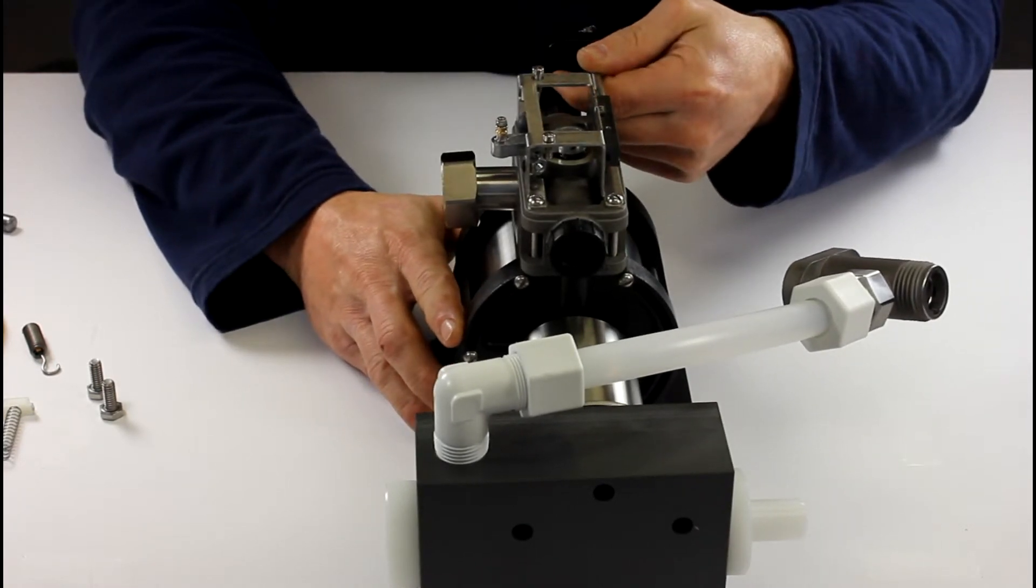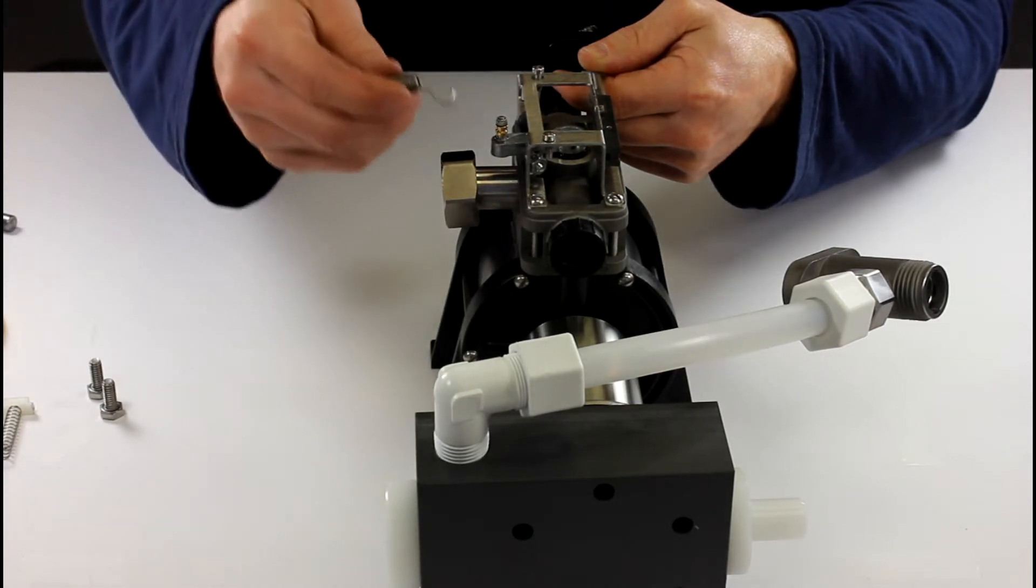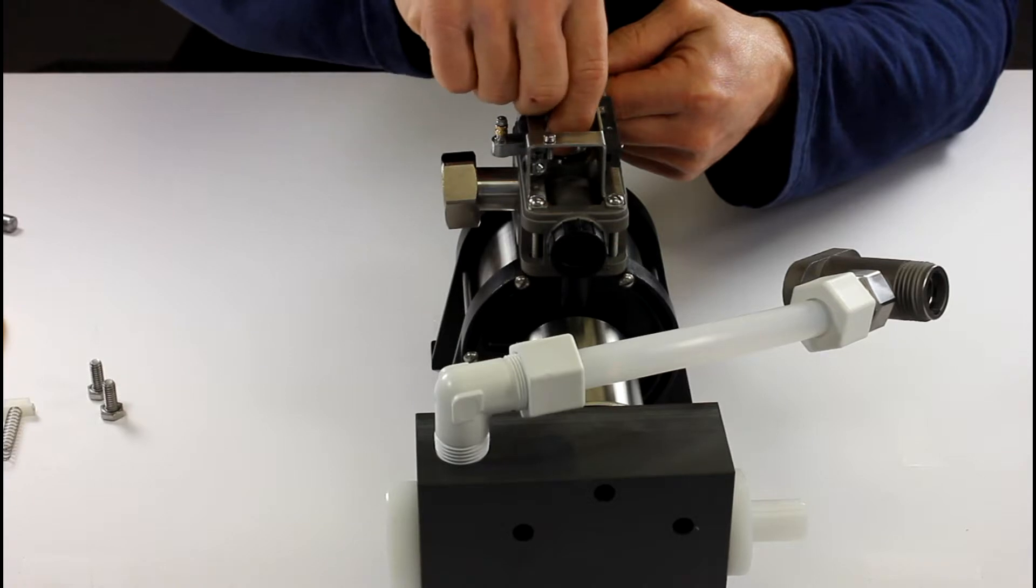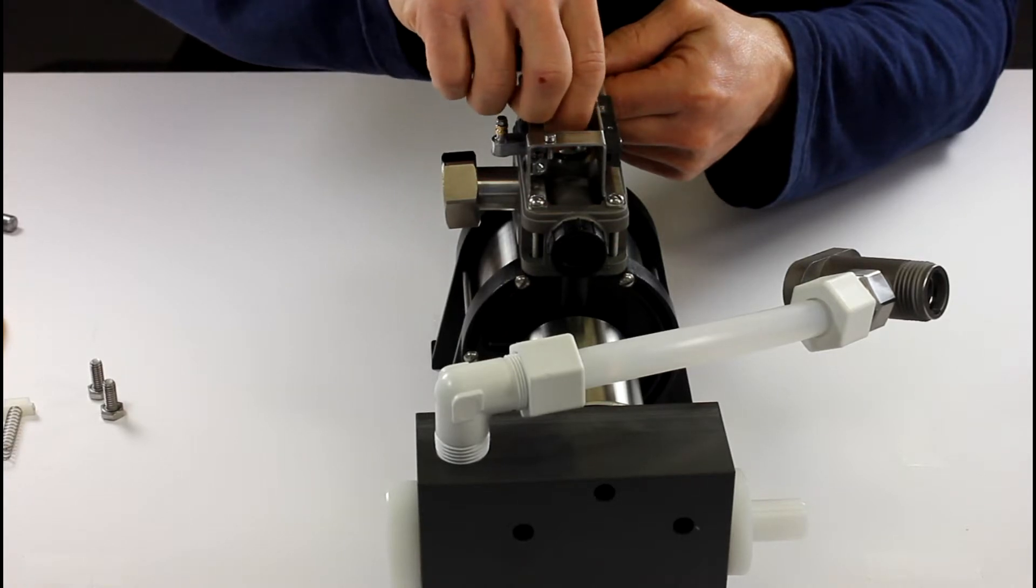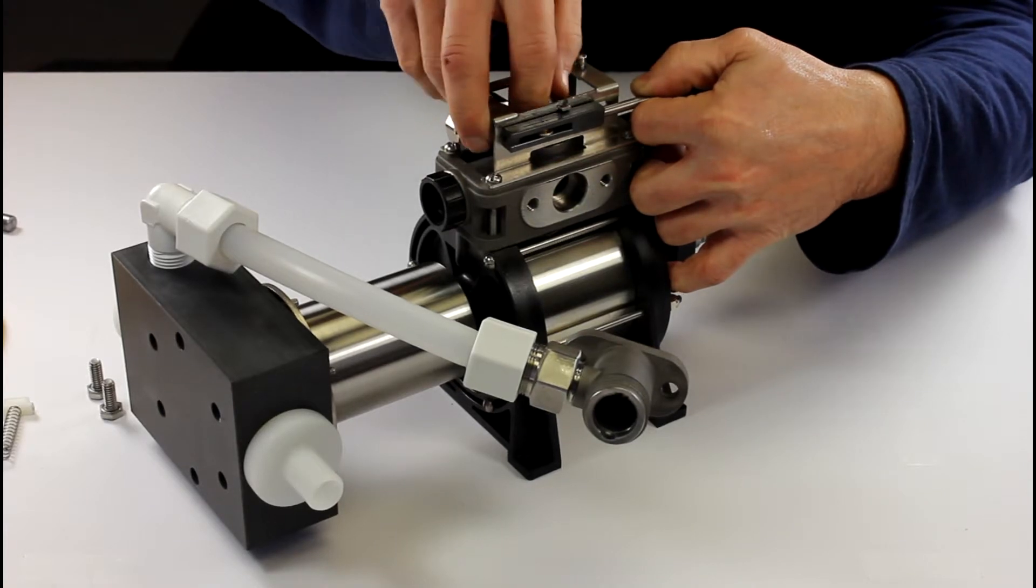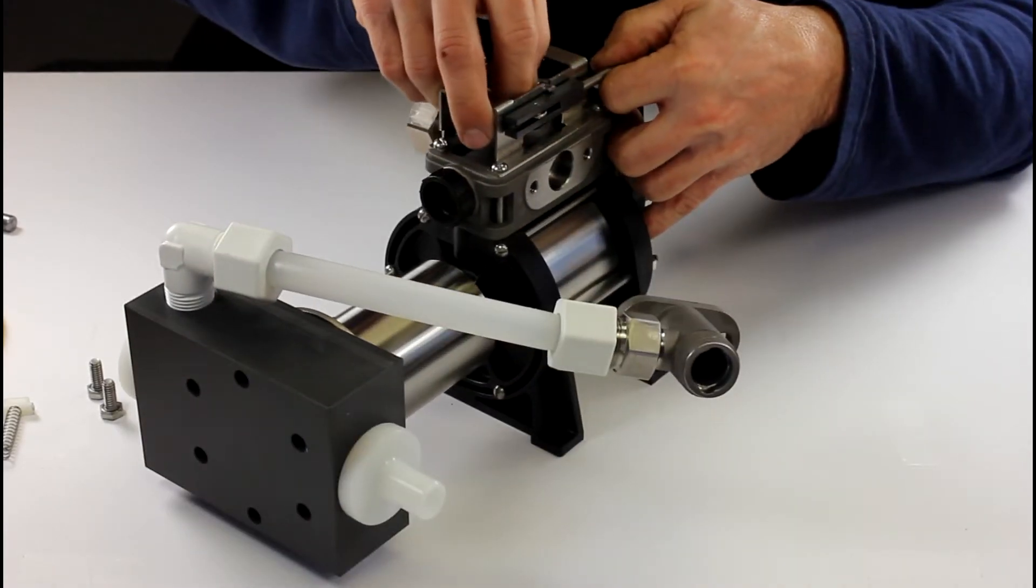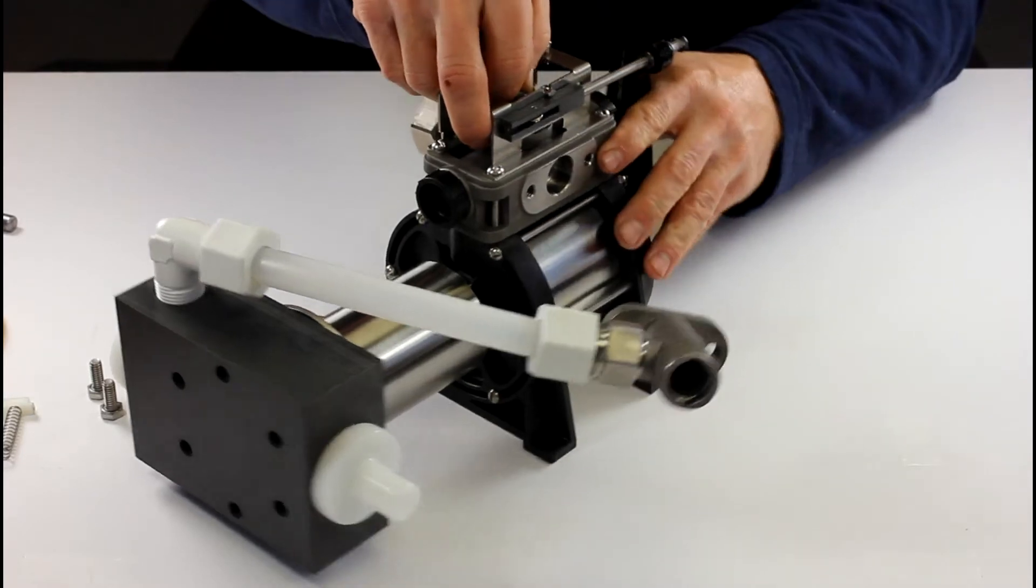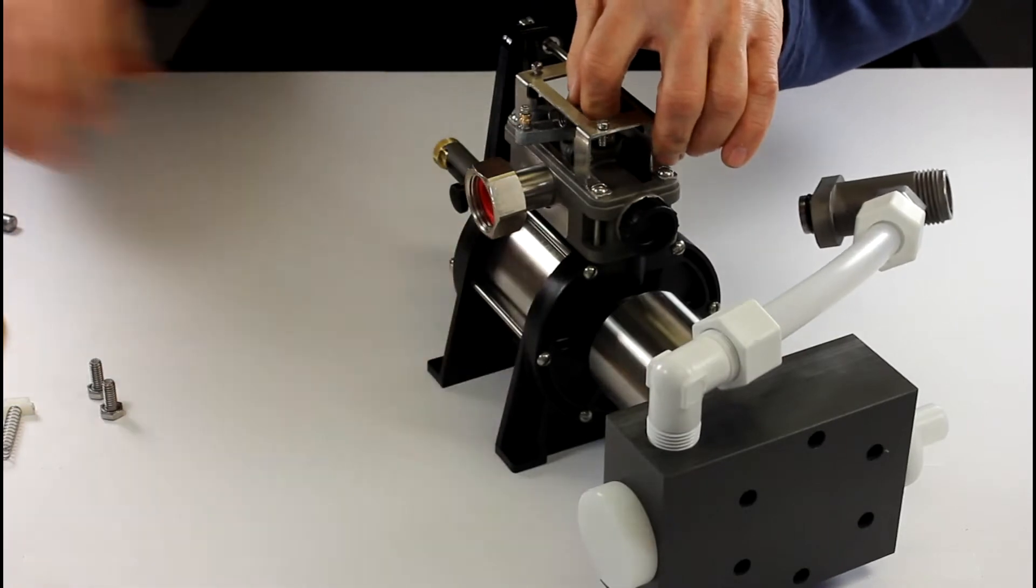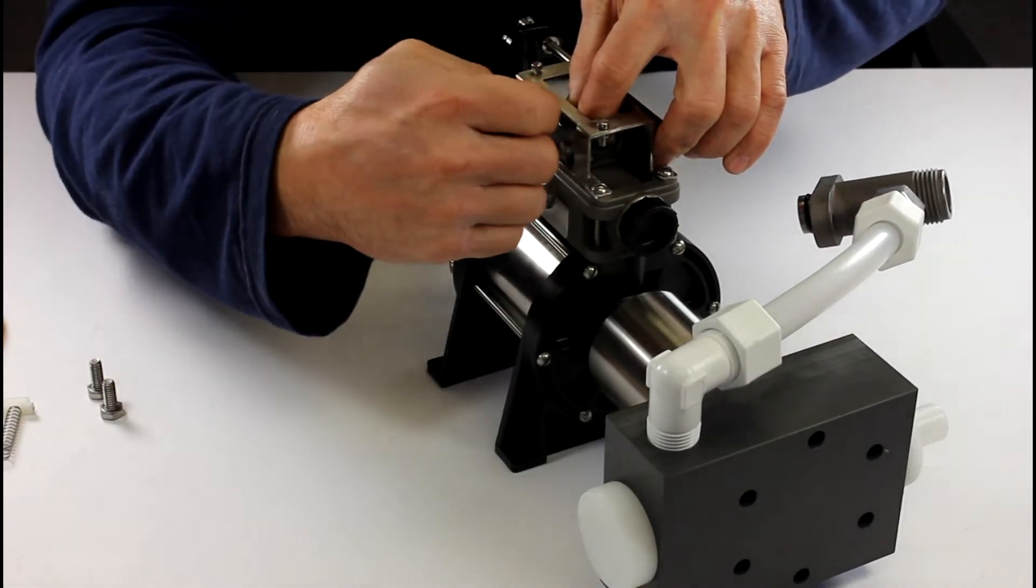Now you're going to take your 298 or your spring again, slide it through your reversing rod. Let's see if I can show you guys a good view there. Get it around that brass bushing.